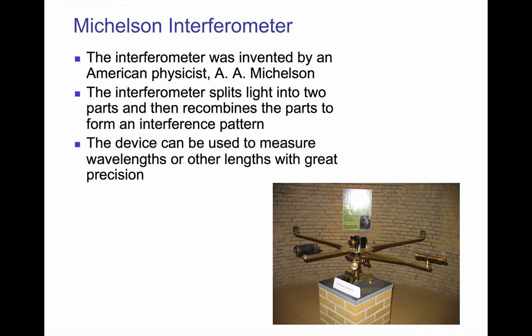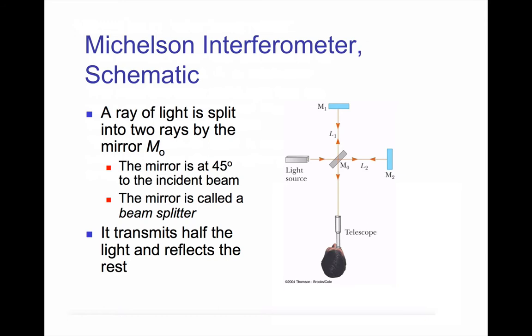First, let's look at how it works. Light comes from a source and hits the mirror M0, that is at 45 degrees. This is called a beam splitter, sometimes called a half silvered mirror, because it transmits half the light and reflects the other half. The ray that reflects travels up to mirror M1, reflects off it, and then half of it will transmit through to the observer at the telescope.